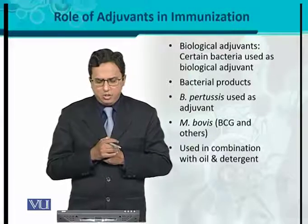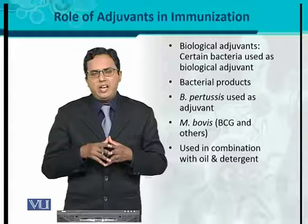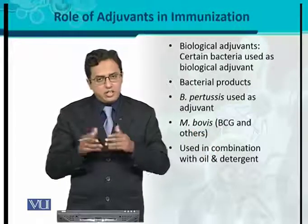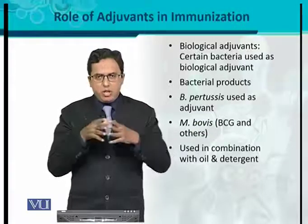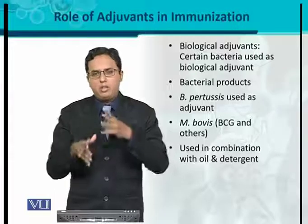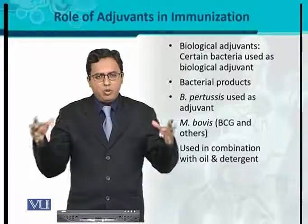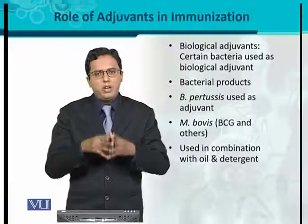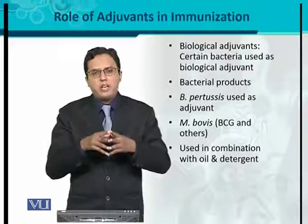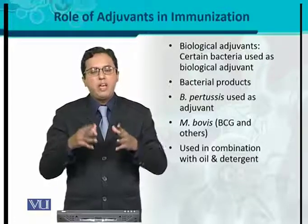These biological adjuvants are used in combination with oil and detergents. The purpose of oil is to cause slow release of the antigen. The body's tissues have an aqueous medium, and since oil does not mix with water, when the adjuvant-antigen mixture with oil is introduced, it does not mix readily. This causes a slow release of the antigens, both inside and outside cells. Detergents help dissolve the oils, ultimately releasing the antigen slowly, which activates the immune response in a gradual manner.